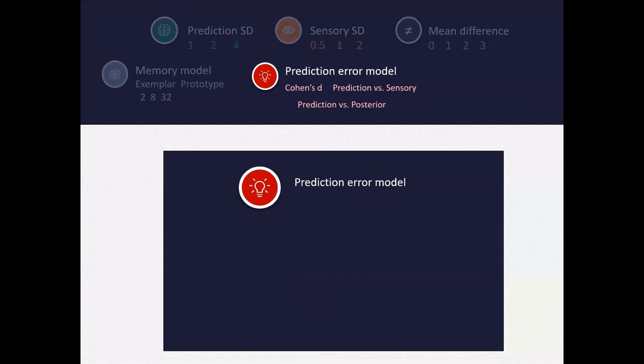In the literature, you have different ways of calculating the prediction error. One way is treating it as an effect size, which is what the authors who discuss misestimation in psychosis do. Others look instead at divergences between distributions, which comes in two flavors. One is the prediction distribution or prior distribution versus the sensory data distribution.